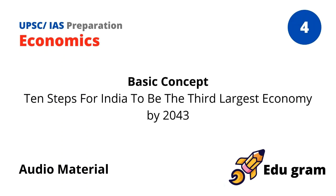Step 9: Skill Development. Skill development must rank alongside secondary education, university education, total sanitation, and universal health care in the priorities of the government.